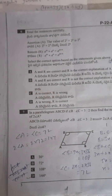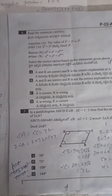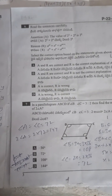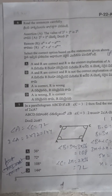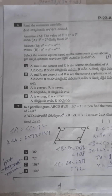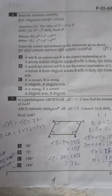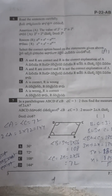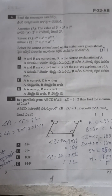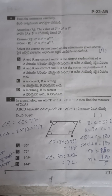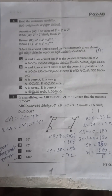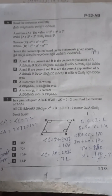Reason: a power m into a power n equals a power (m plus n). Both assertion and reason are correct, and reason is the correct explanation of assertion. Next, seventh question: in a parallelogram ABCD, angle B to angle C equals 3 to 2.